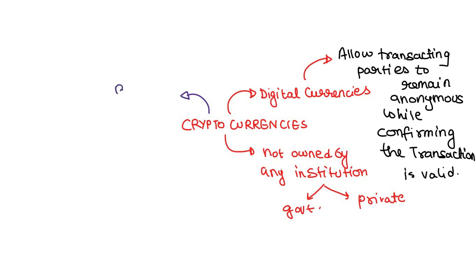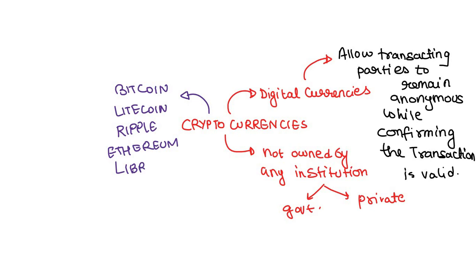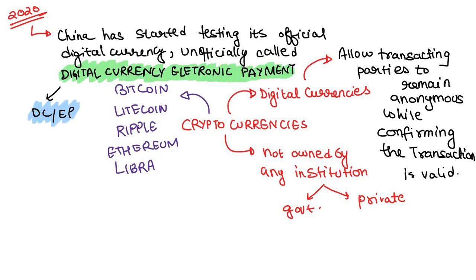Some famous examples of cryptocurrencies are Bitcoin, Litecoin, Ripple, Ethereum, and Libra. In the year 2020, there was news that China started testing its official digital currency, unofficially called Digital Currency Electronic Payment, also known as DCEP.